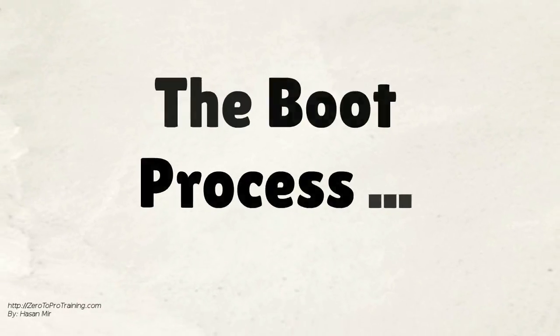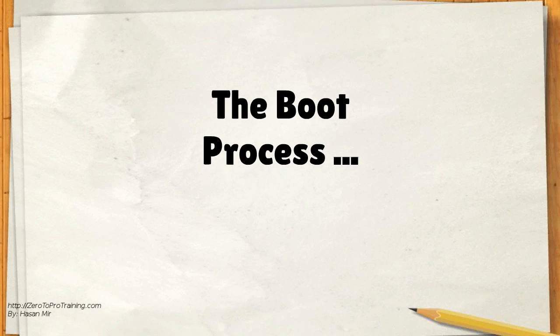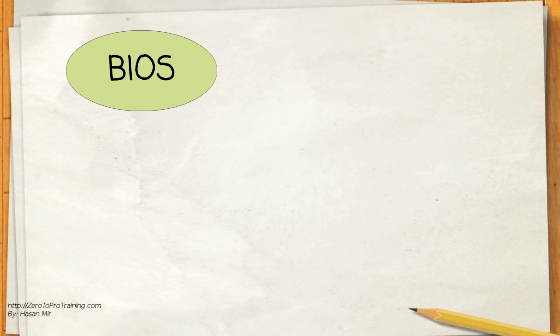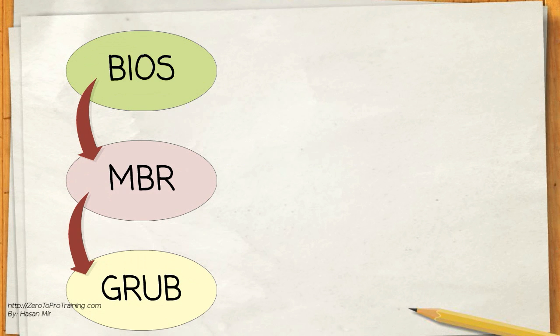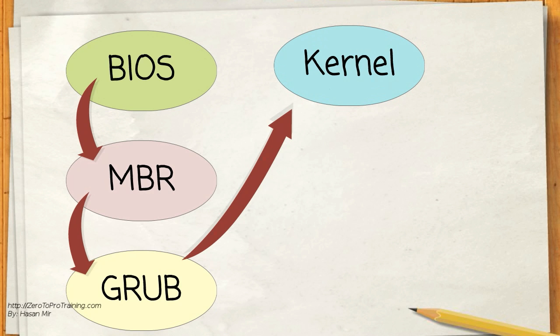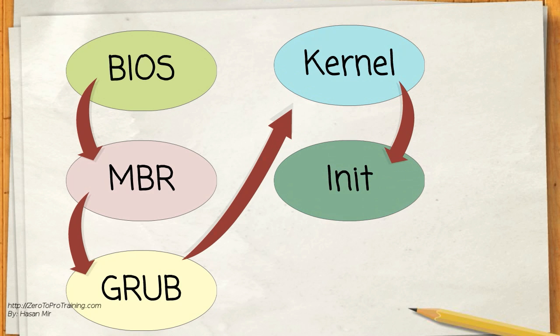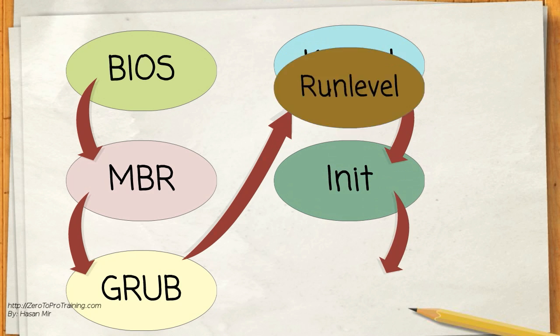The following are the six high-level stages of a typical Linux boot process: BIOS, MBR, GRUB, Kernel, Init, and RunLevel.